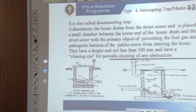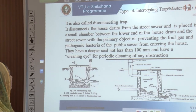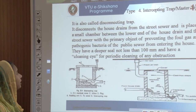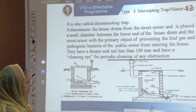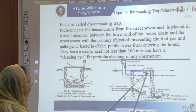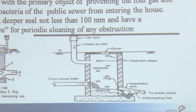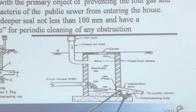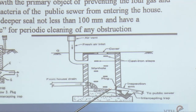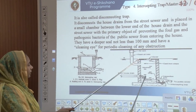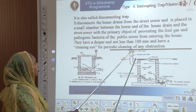The intercepting trap or master trap is also called a disconnecting trap. This disconnecting trap disconnects the whole house from the street sewer and is placed in a small chamber between the lower end of the house drain and the street sewer. An interceptor is provided so that foul gas and pathogenic bacteria do not enter the house. It has a deeper seal of not less than 100 mm and has a cleaning eye for periodic cleaning.